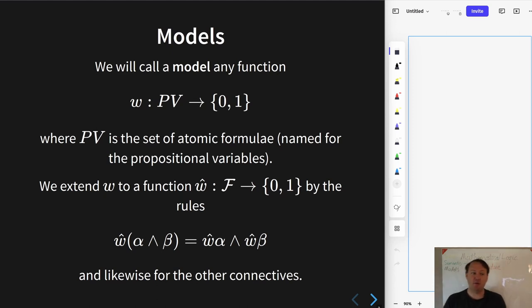So on the left-hand side, we have the conjunction symbol, and on the right-hand side, we have the conjunction function. The idea is that you recursively apply the function to alpha and beta individually and then put the results of those two evaluations of W hat on some formula together with the conjunction function on the right-hand side. And that's how you evaluate a conjunction sentence.